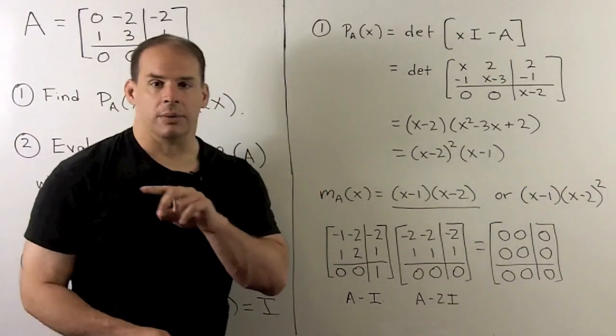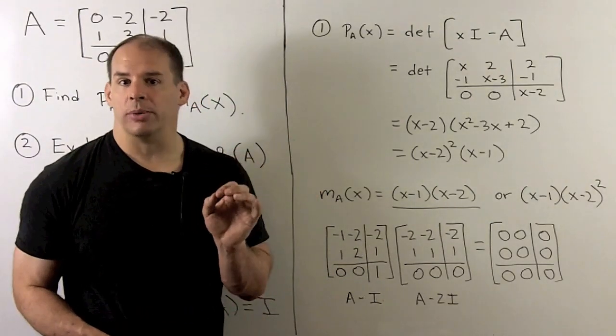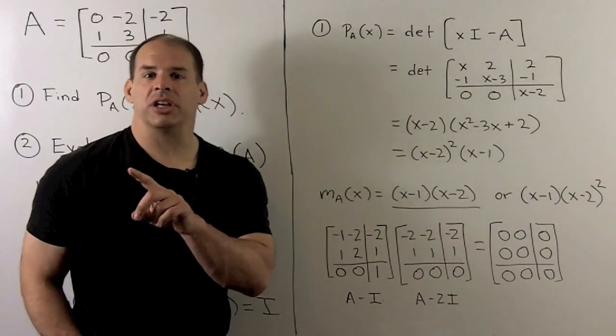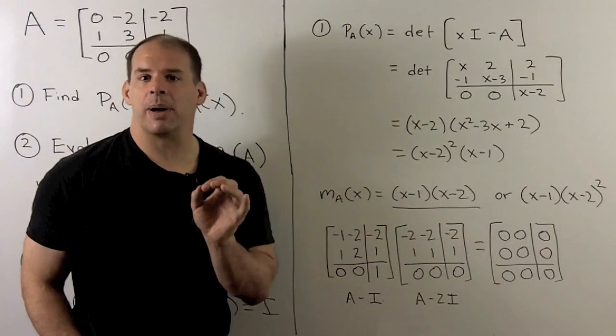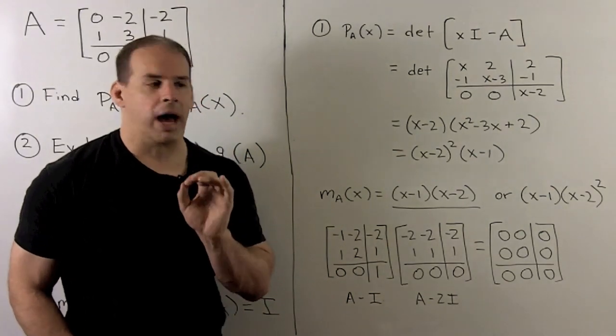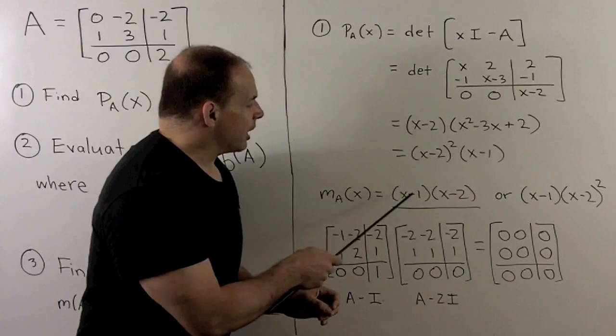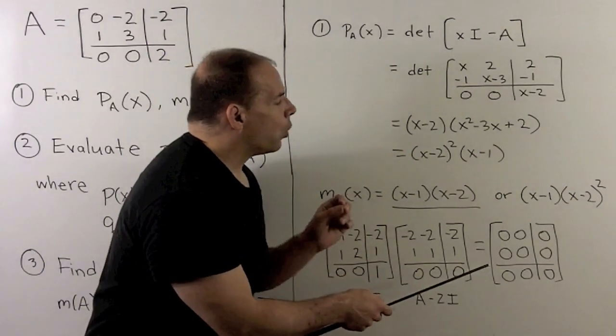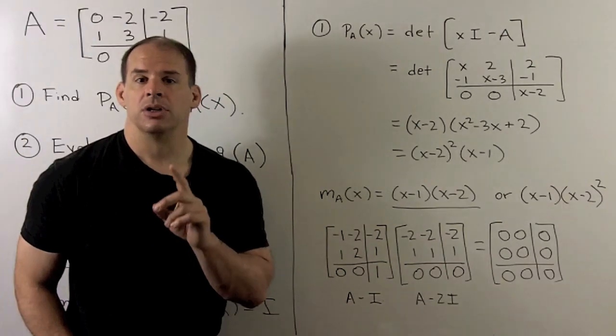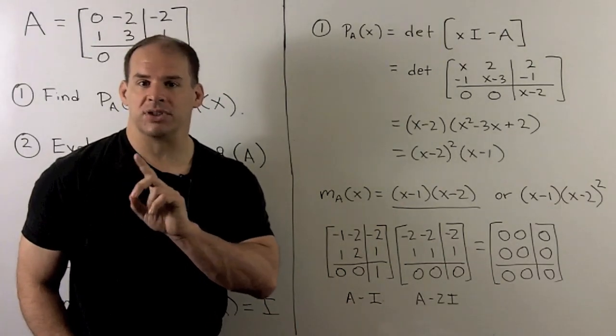Theorem states the minimal polynomial divides the characteristic polynomial, and each irreducible factor of the characteristic polynomial divides the minimal polynomial. So that gives us two options: either X minus 1 times X minus 2, or X minus 1 times X minus 2 squared. We just check to see which one gives us zero.